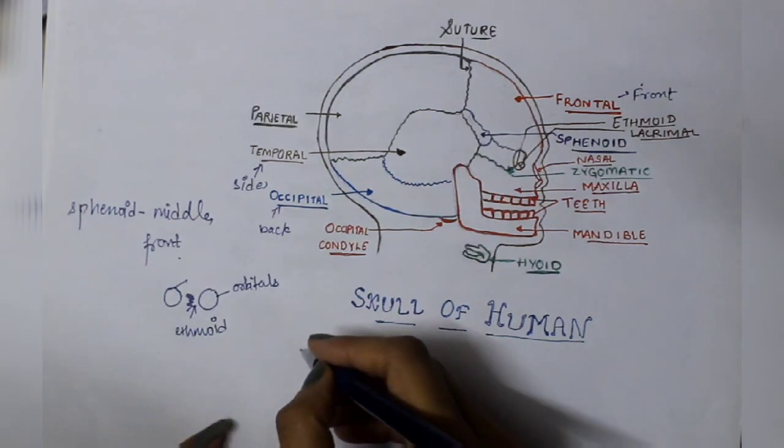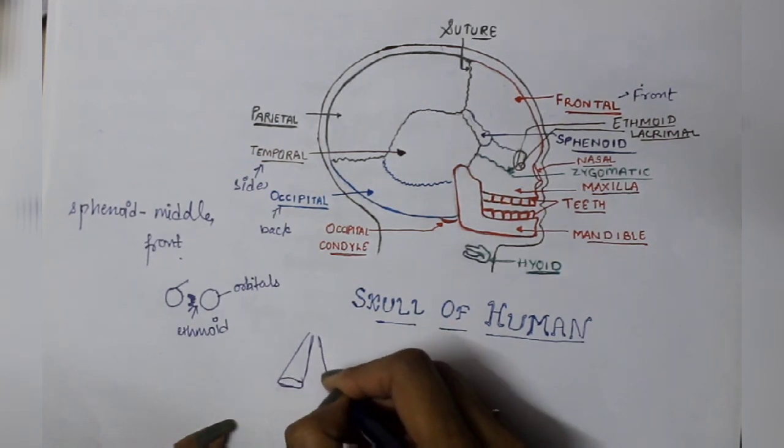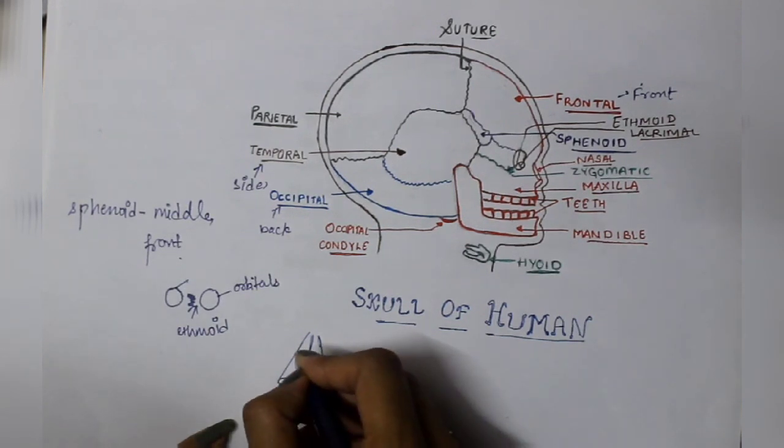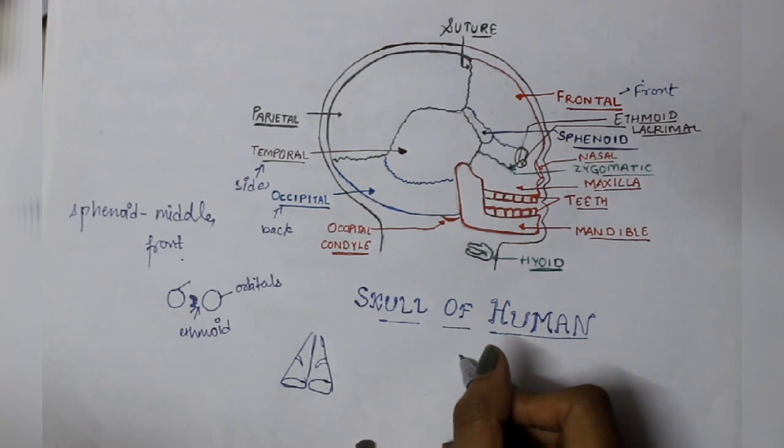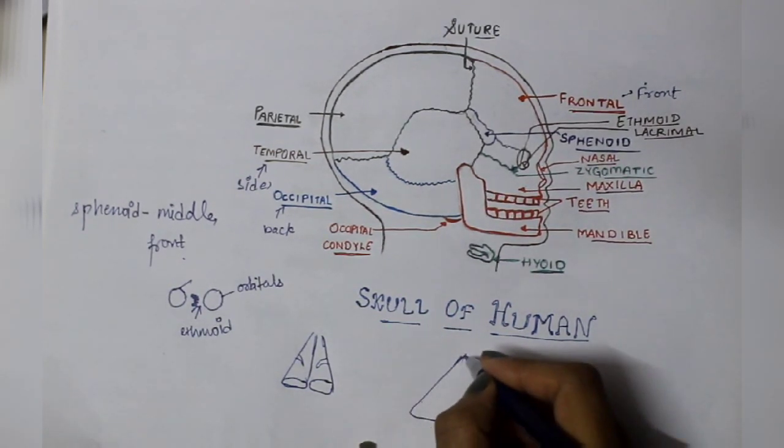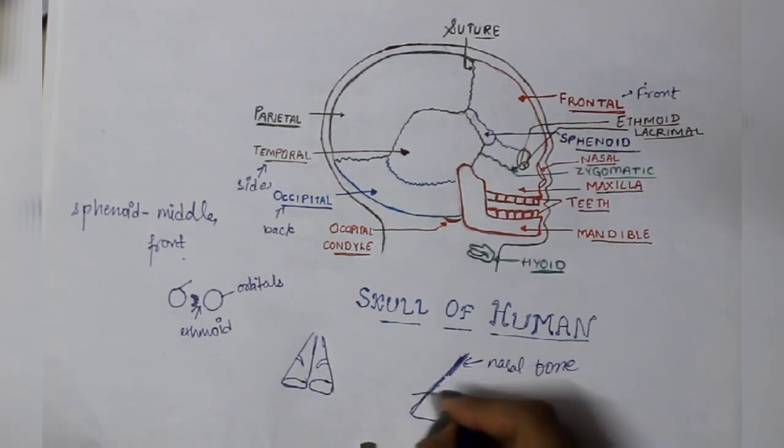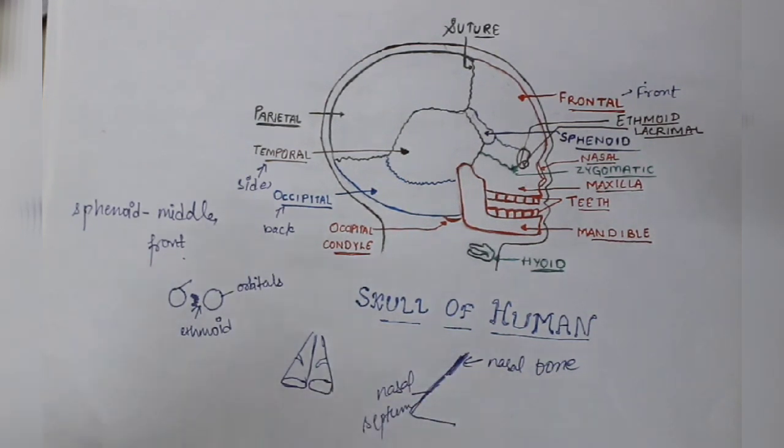Then the inferior nasal conchae. If I make this nose structure, if we look at the front, it is present in the inner part. The nasal inferior conchae. Where will it present? In the inner part.